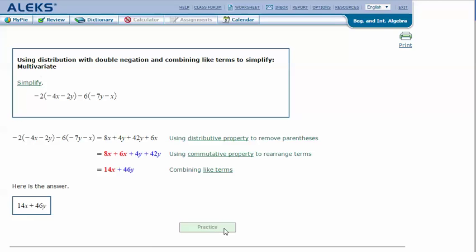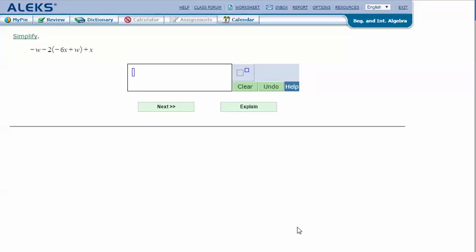Let's try another one. Simplify negative w, or it's like negative 1w, minus 2 times parentheses negative 6x plus w end parentheses plus x.